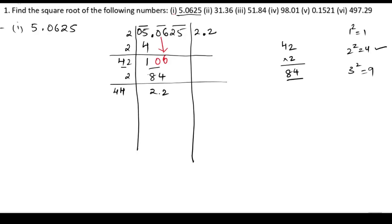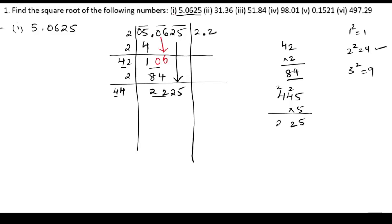We bring down 25. In the 4 table, the nearest number to 22 is 20. We know 4 times 5 is 20. So we check: 445 into 5 — 5 times 5 is 25, 5 times 4 is 20, plus 2 is 22; 5 times 4 is 20. So multiplying with 5, we get 2225.